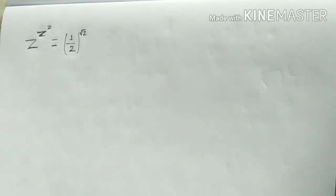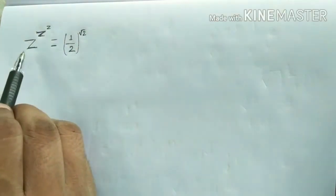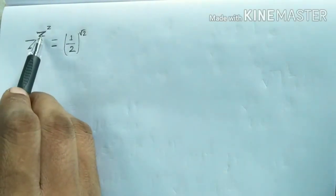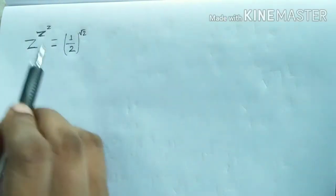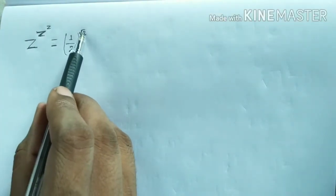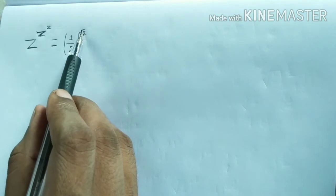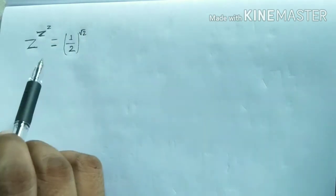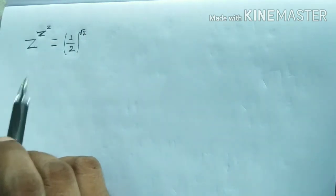Hello guys, welcome to my channel Hardest Maths. It's me Vinesk Barmondorf and today I came with one of the very interesting questions of algebra. As you can see here, the question is z to the power z to the power z is equal to 1 by 2 to the power root over 2. This is the question and it is asked to solve for z.